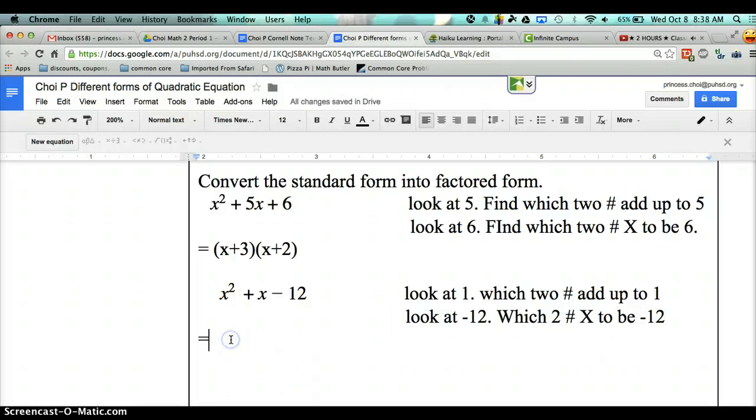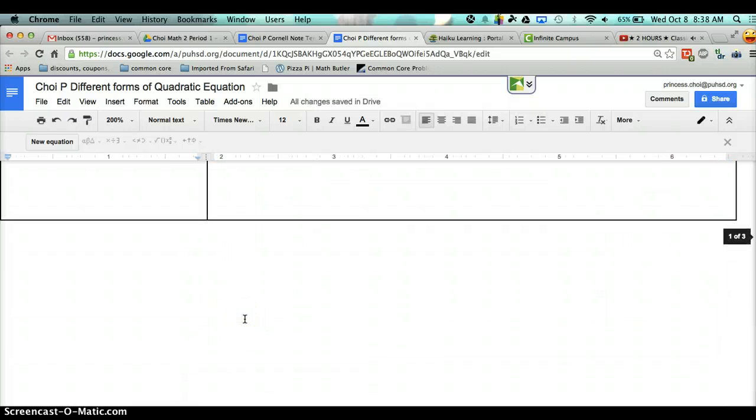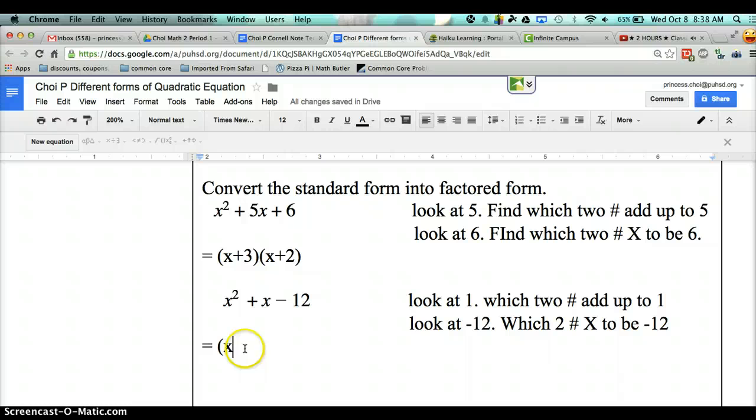And then I want you to look at negative 12 and then which two numbers multiply to be negative 12? So does anybody have an answer? You start with x. You start with x and then you have to fill it in, two parentheses.